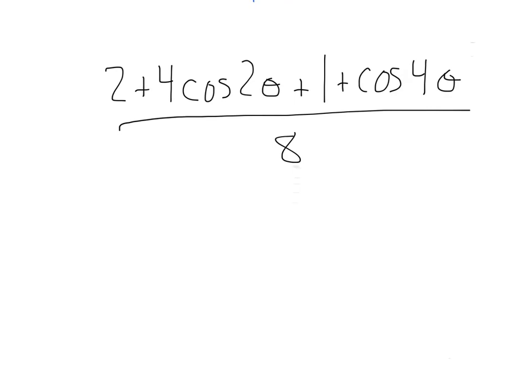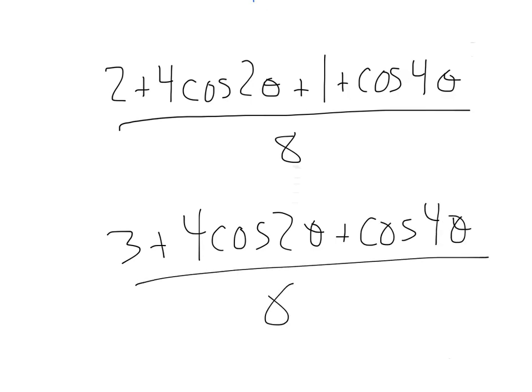Finally, let's go ahead and combine our like terms. It looks like we can combine this 2 and this 1. That will give us 3 plus 4 cosine 2 theta plus cosine 4 theta all over 8. And, it doesn't look like we have any more powers bigger than 1. So, that's going to be our answer.